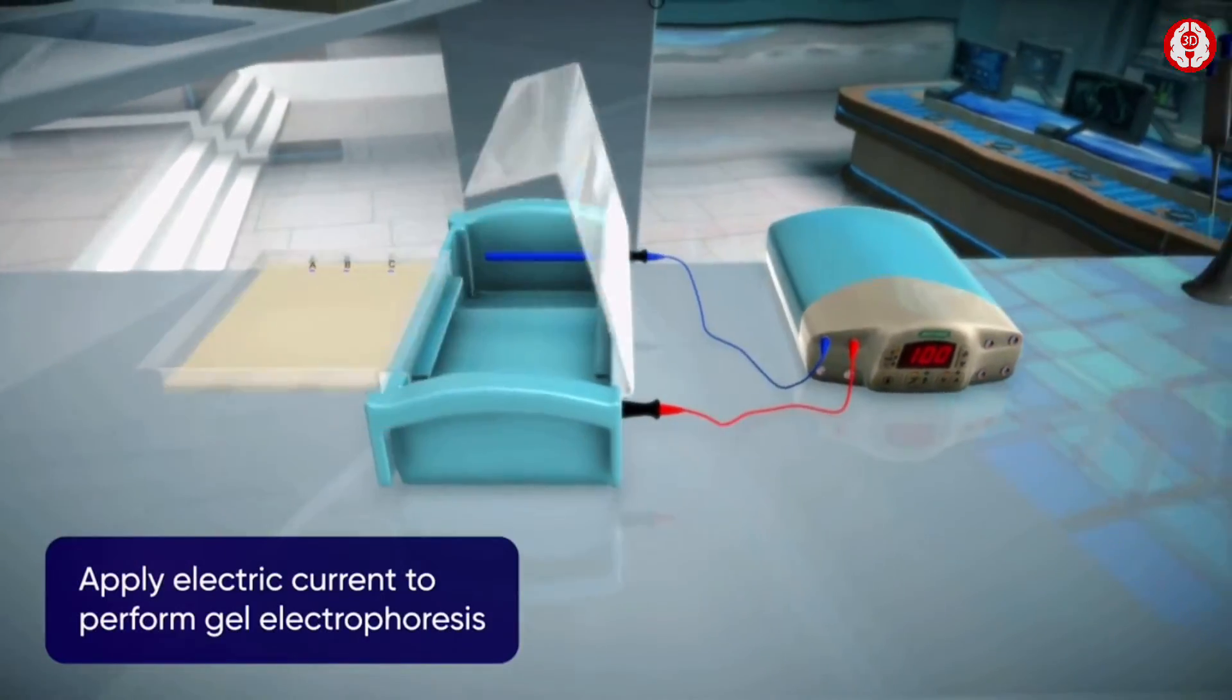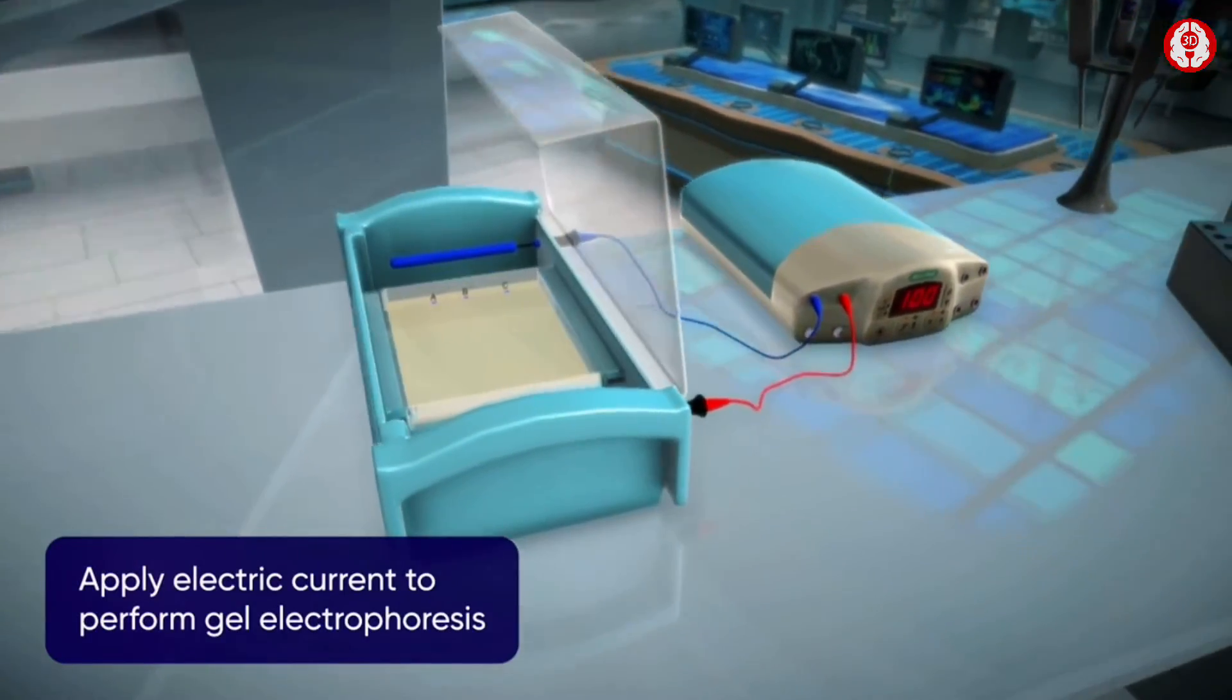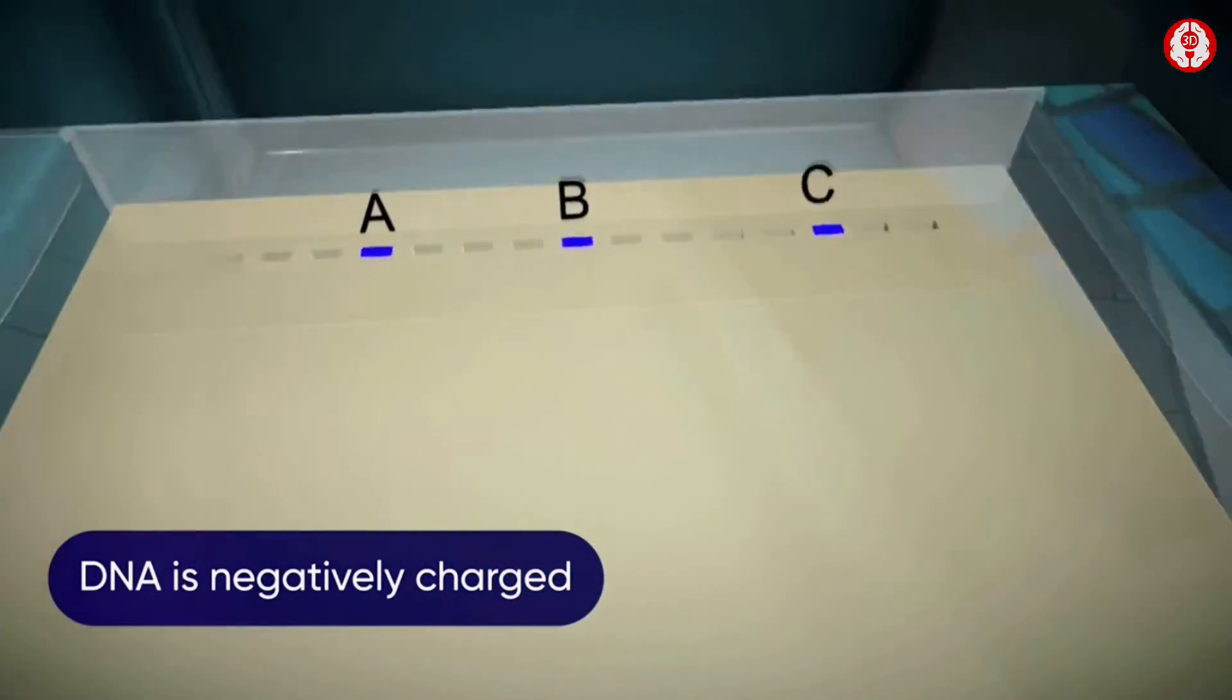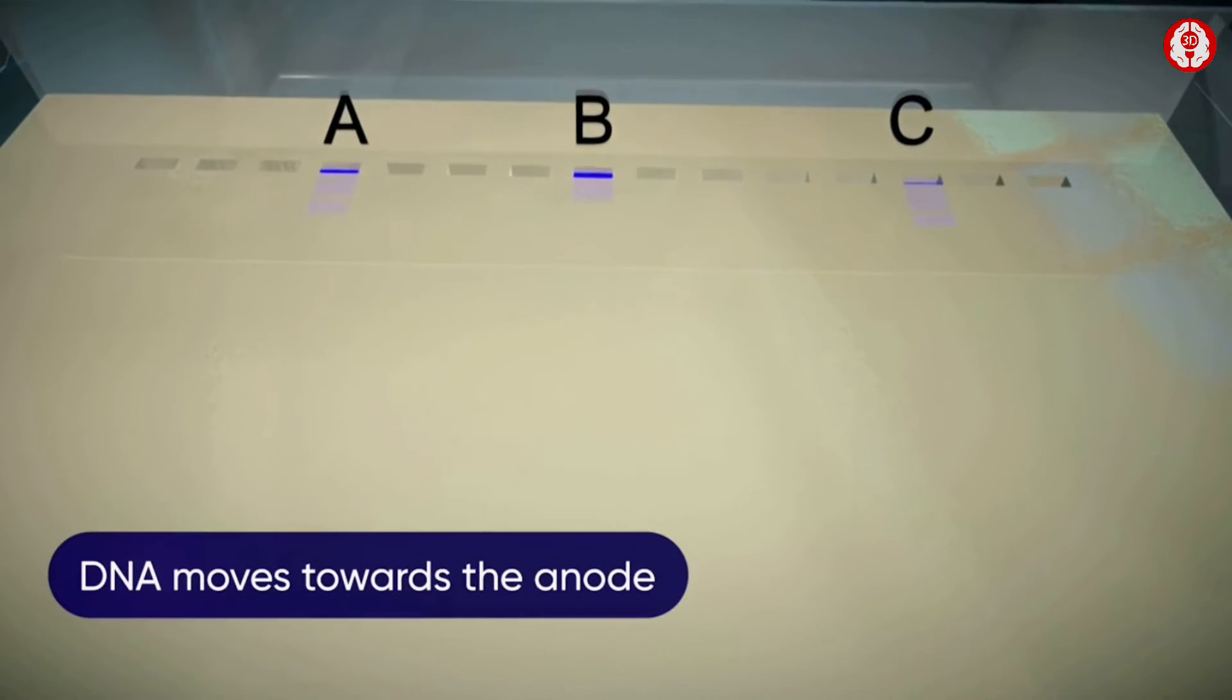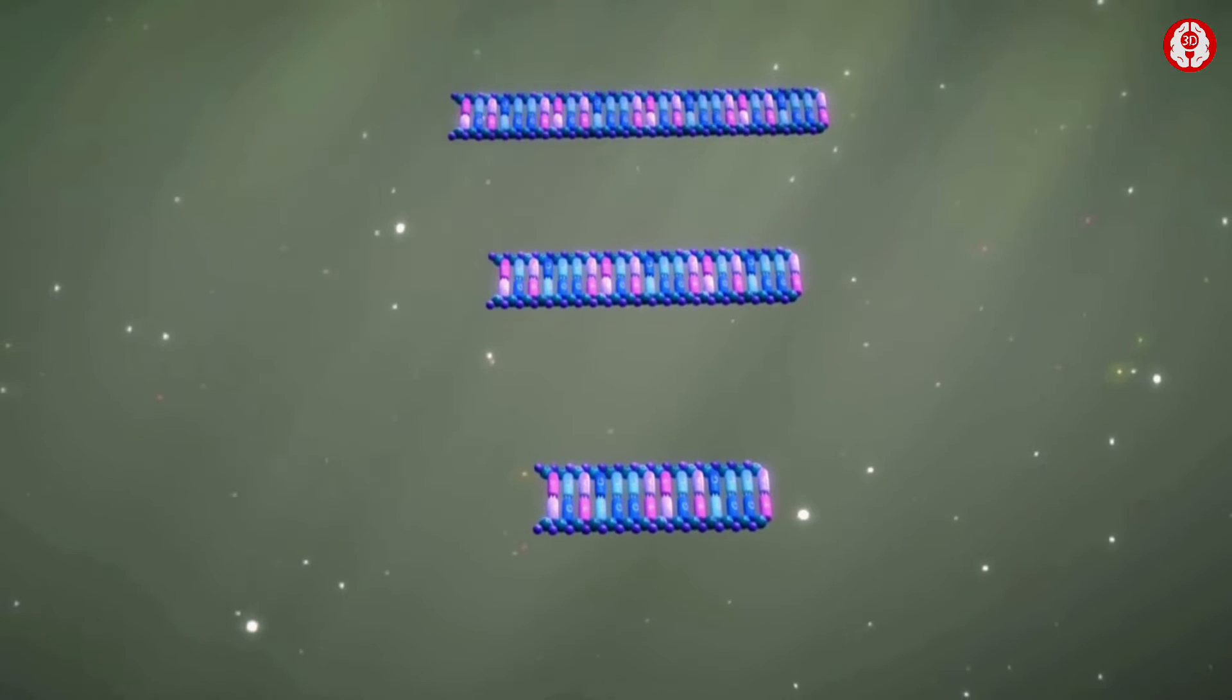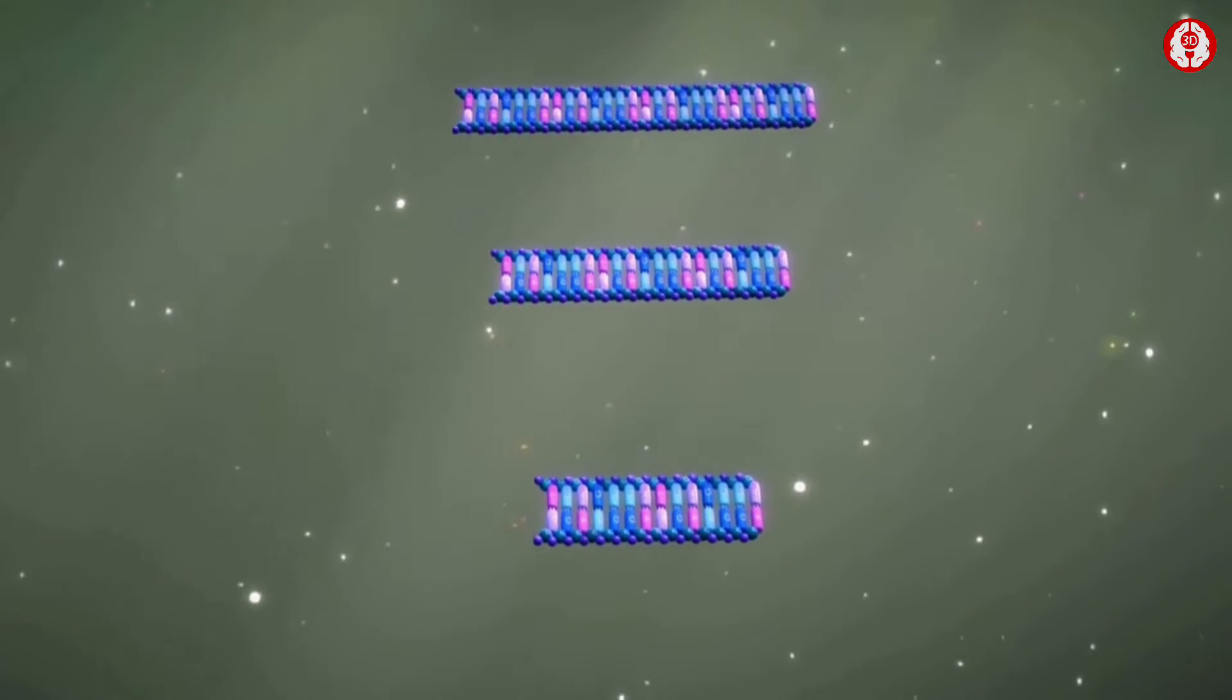Now the gel is subjected to an electric current to perform gel electrophoresis. As the DNA is negatively charged it will start moving towards the positive pole or anode.